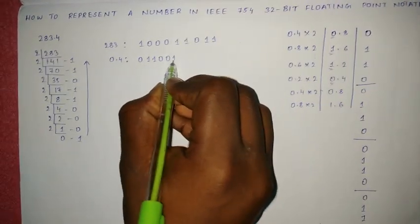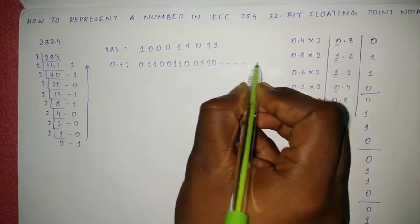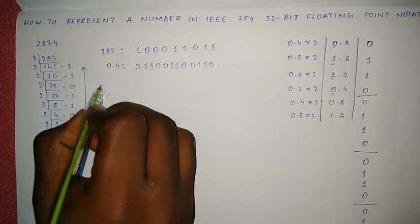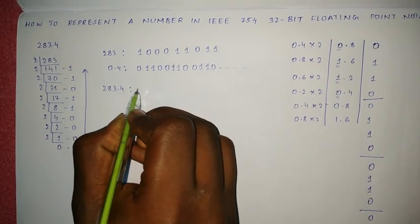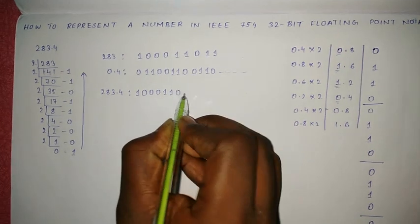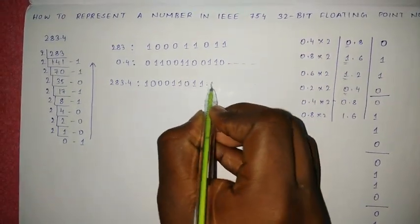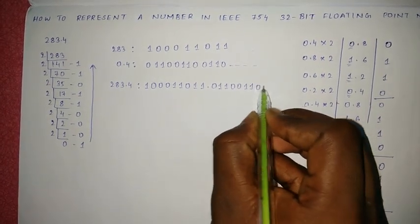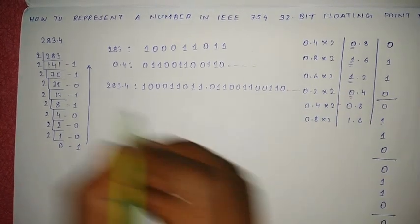The binary form of 0.4 is 01100110 and so on. Therefore, the binary form of 283.4 is 100011011.01100110... and so on. This is the first step.